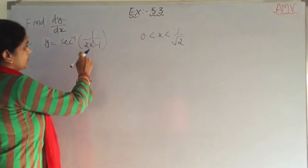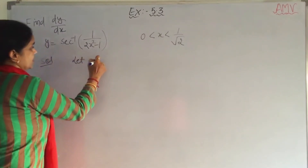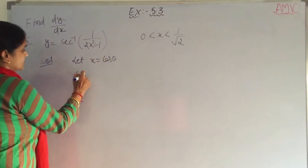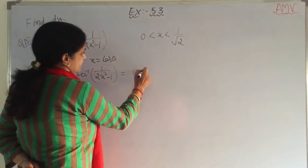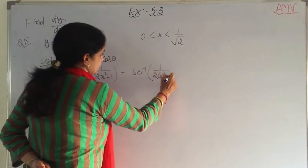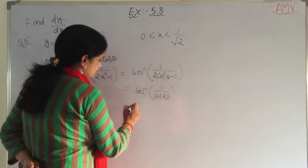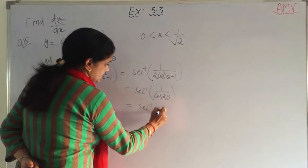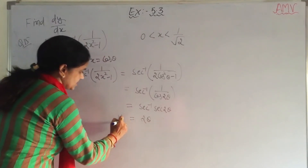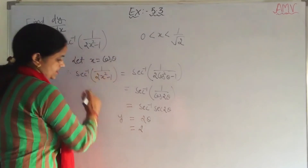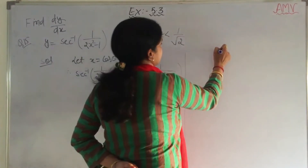Last question of this exercise. Y is equal to sec inverse of 1 upon (2x square minus 1). For this question, let x equal cos theta. So sec inverse (1 upon (2x square minus 1)) becomes sec inverse (1 upon (2 cos square theta minus 1)). This is the formula of cos 2 theta. So it gives sec inverse (sec 2 theta), and from this step we find it is 2 theta only. So y equals 2 theta, and substituting theta equals cos inverse x, y equals 2 cos inverse x.